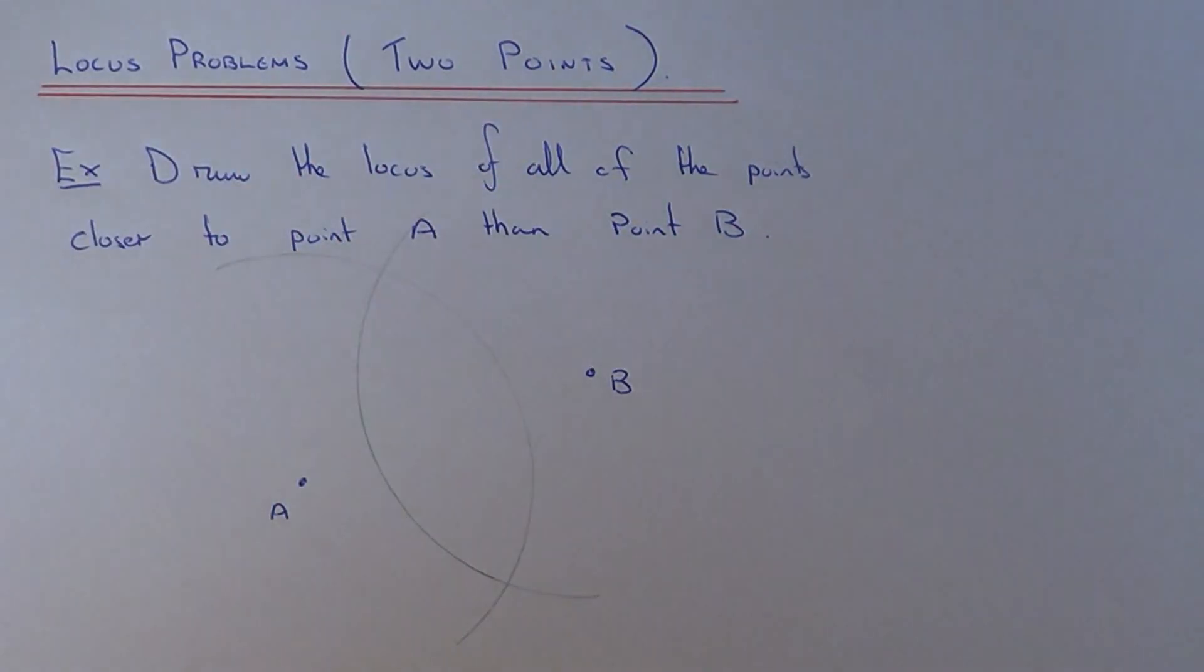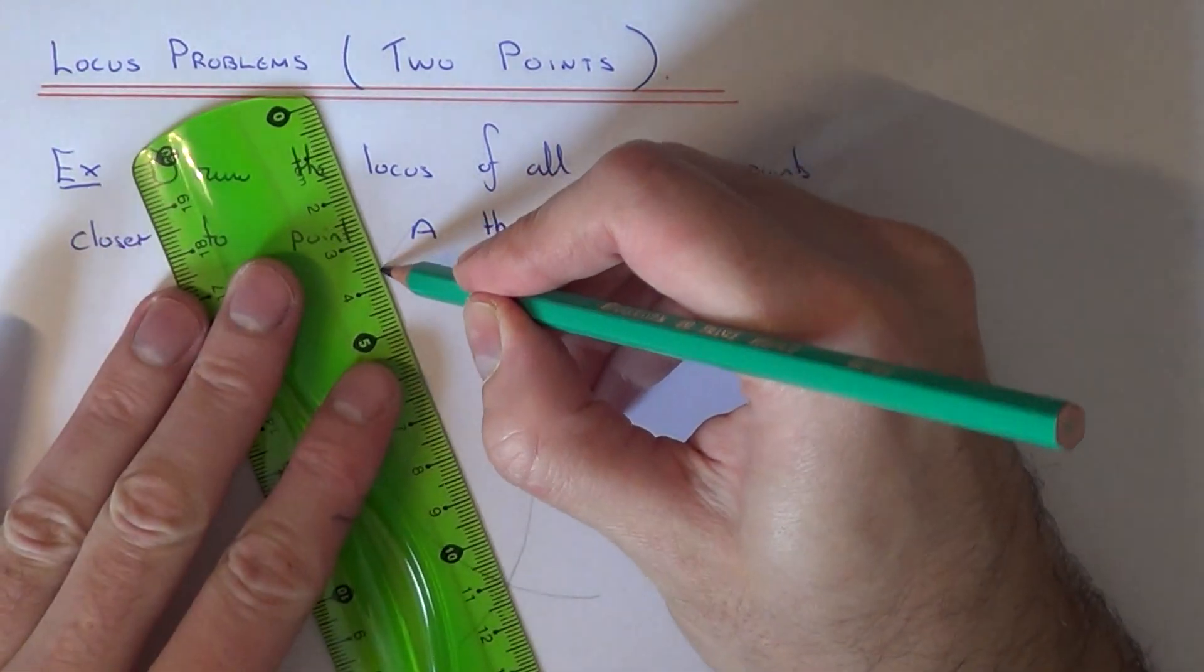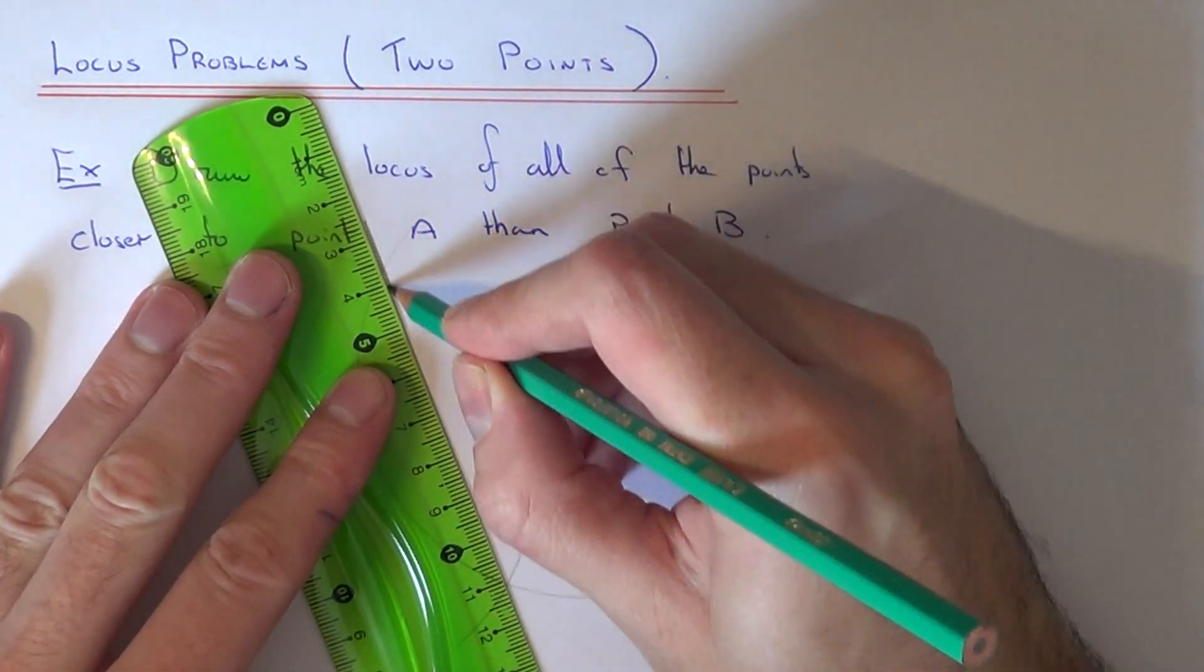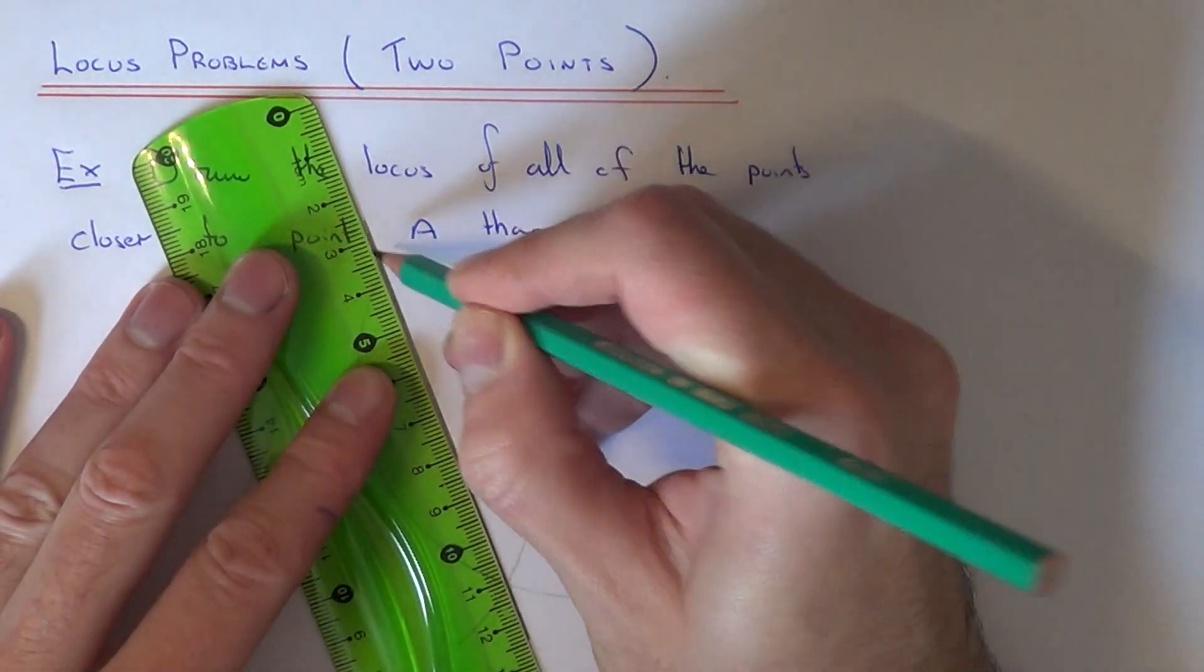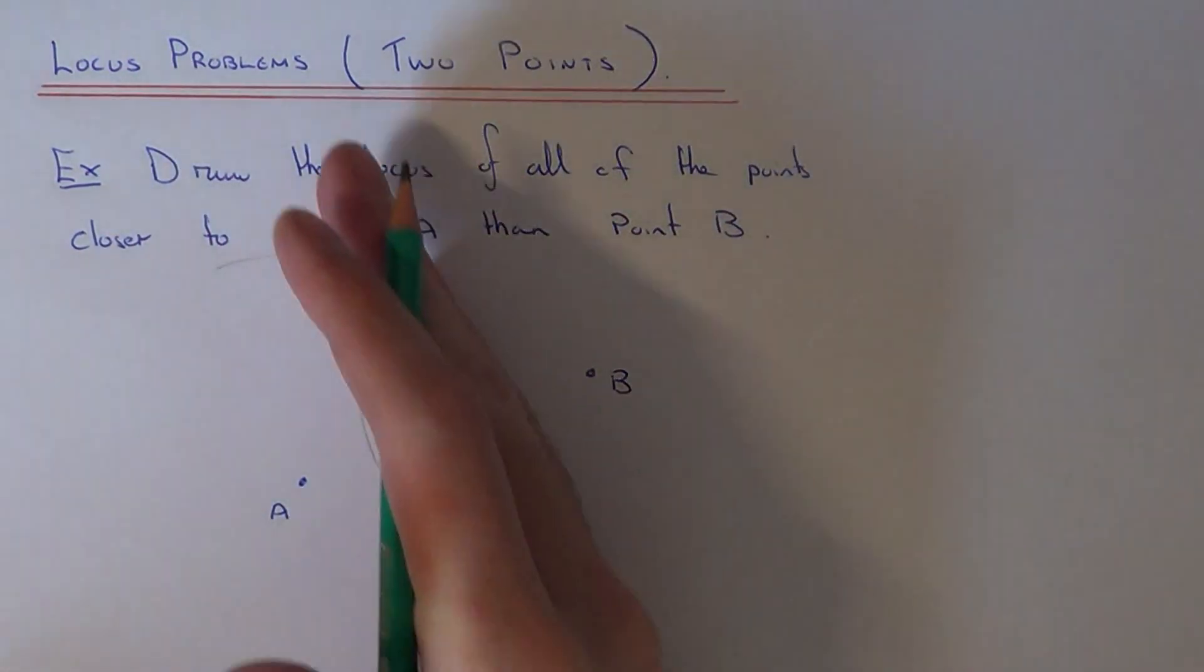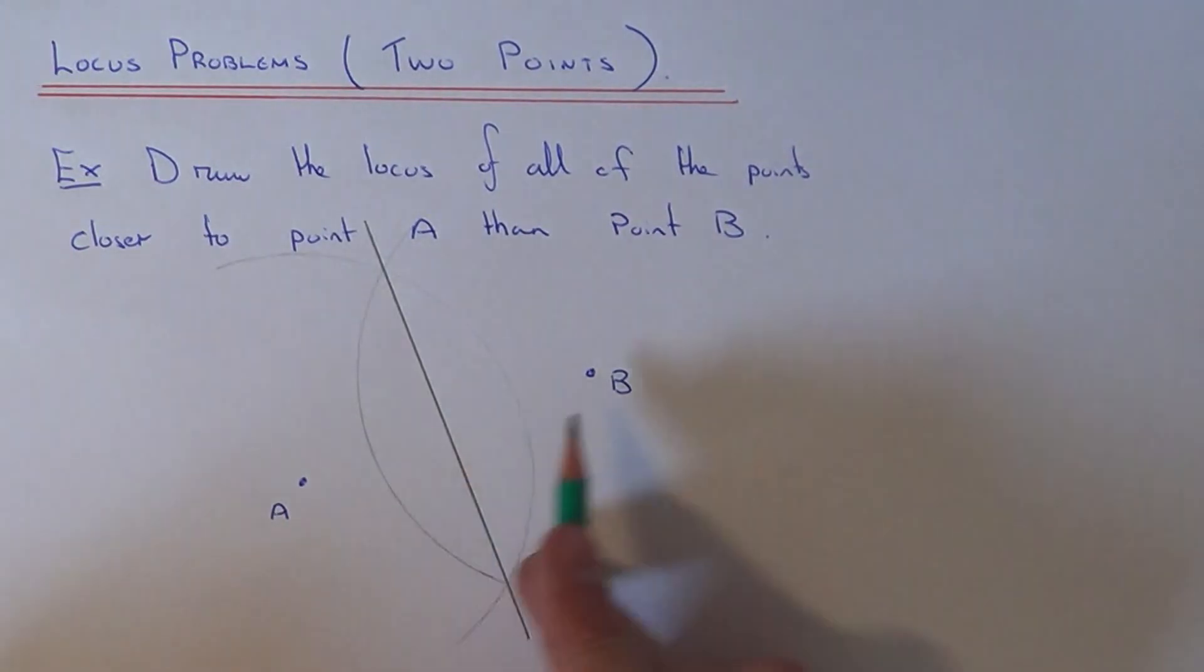So we just need to now join the two intersection points. So this is basically our dividing line, our borderline between A and B.